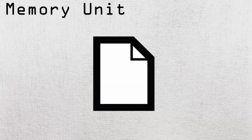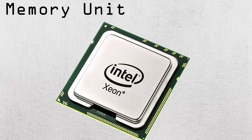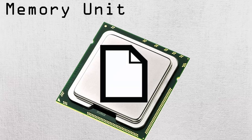Next on the list we have the cache. This is where the most frequently used information for the CPU is stored. It is not a lot of memory, usually in kilobytes or a few megabytes. Its advantage over the RAM is its position on the CPU — it is right on top of it, meaning that information gets transferred almost instantaneously.